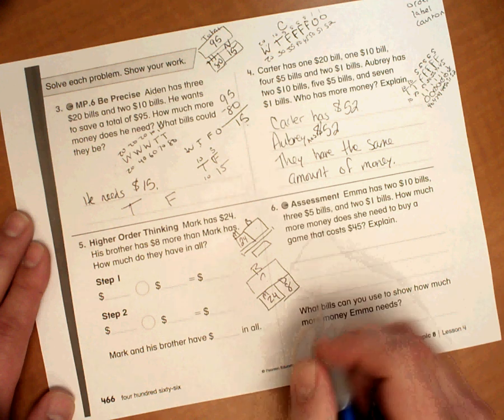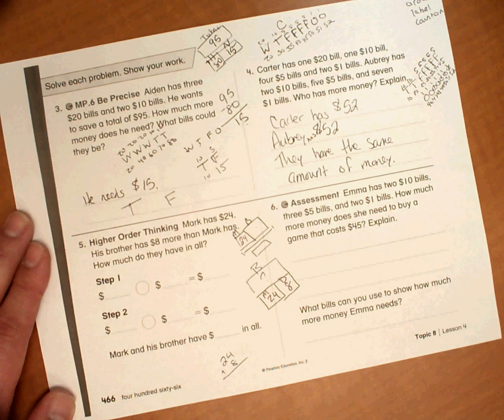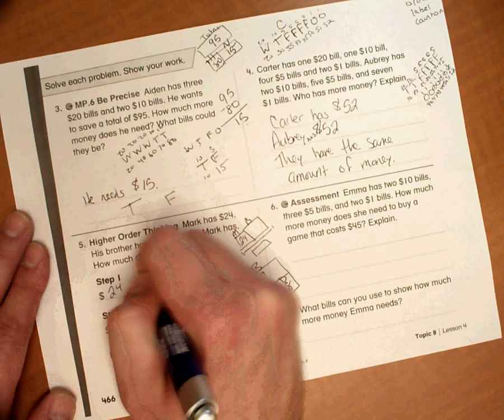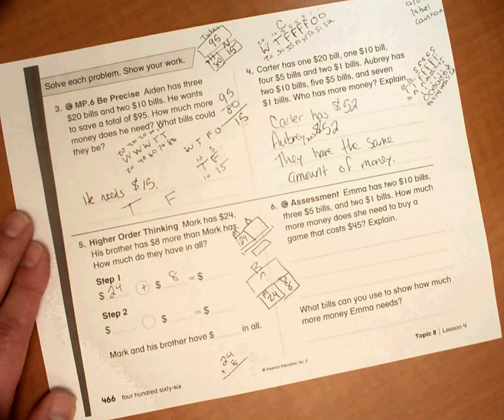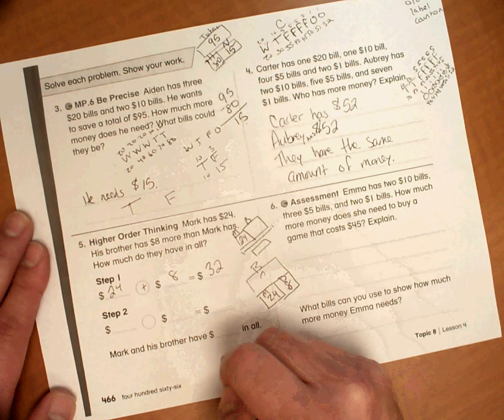We're going to make an equation. 24 plus 8. And that's how much money his brother has. So $24 plus $8. And that is going to equal $32.